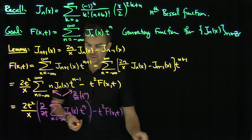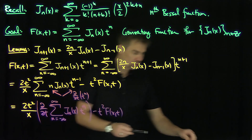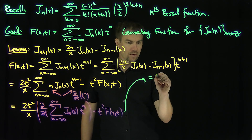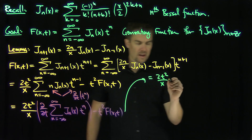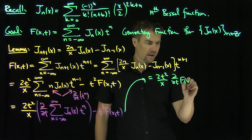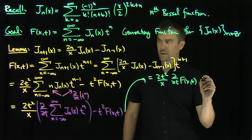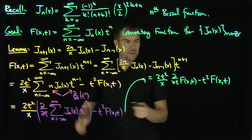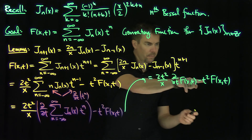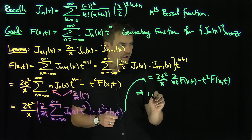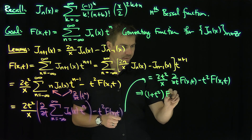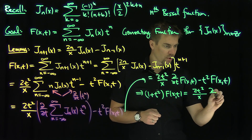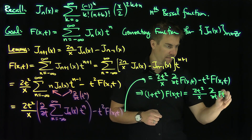So we have: f of x and t equals 2t squared over x times the partial derivative with respect to t of f of x and t, minus t squared times f of x and t. Rearranging, this implies that 1 plus t squared times f of x and t equals 2t squared over x times partial partial t of f of x and t.